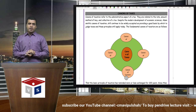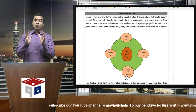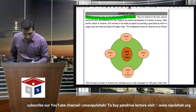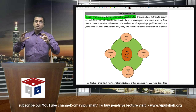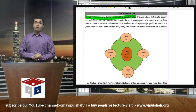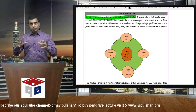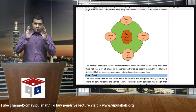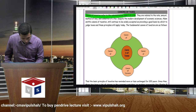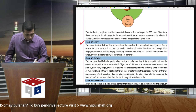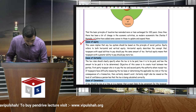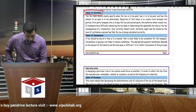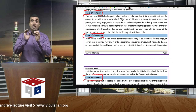As you can see on the screen, here are 4 Canons of Taxation. What is the meaning of Canon of Taxation? Canon of Taxation means Administrative Aspect of Tax. There are 4 Canons: First is Canon of Equity, second is Canon of Certainty, third is Canon of Convenience, and fourth is Canon of Economy.